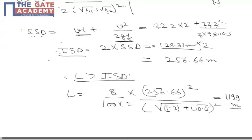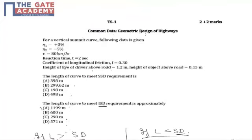L, that is length of curve, is greater than ISD or intermediate sight distance. Hence, the assumption that we took initially is correct, hence the obtained solution is correct, making A as the correct choice for the second part of this common data question. Thank you.